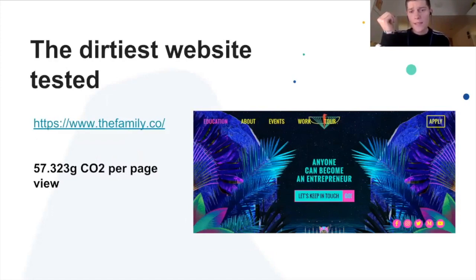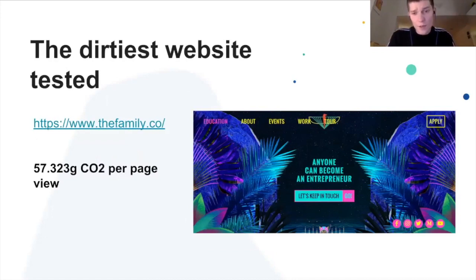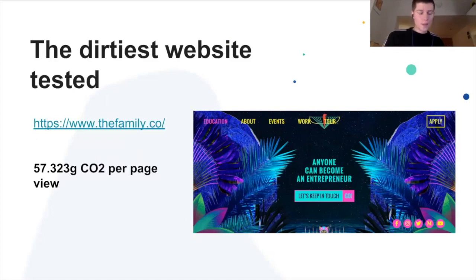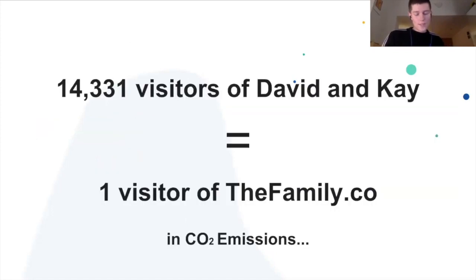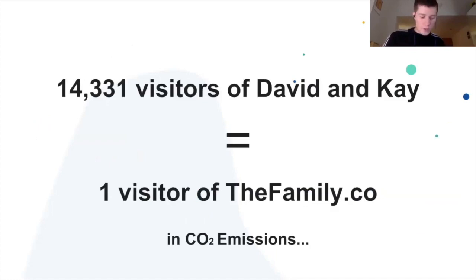At the other end of the scale, one website came in at 57 grams of CO2 per page view. This is a classic example where it loads a lot of images with nothing resized or compressed at all — just as if the photos had been taken straight from a camera. To put it in perspective: 14,000 visitors to the most efficient site is equal in CO2 emissions to just one visitor to the heaviest site.